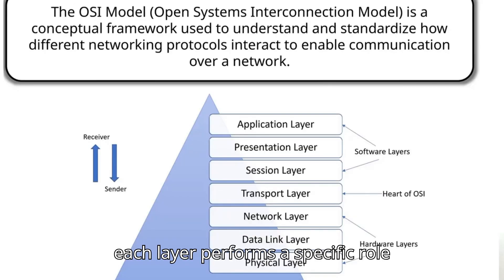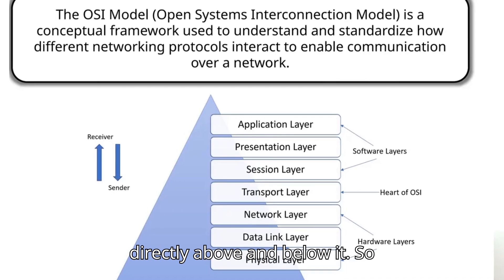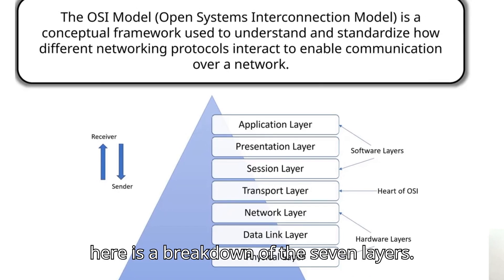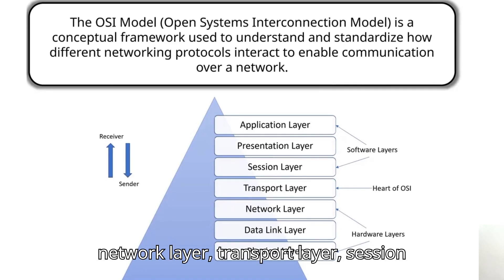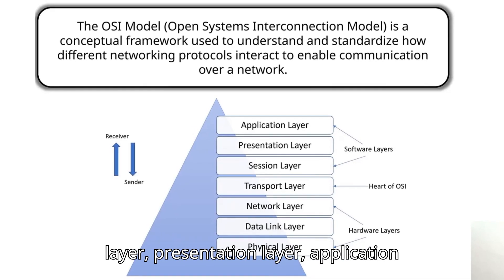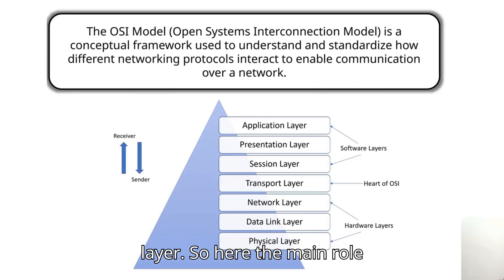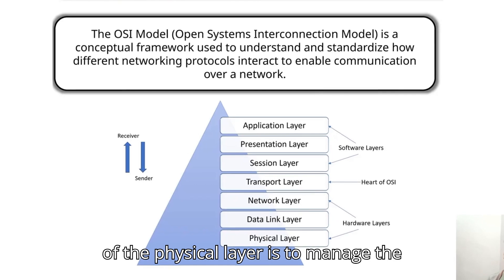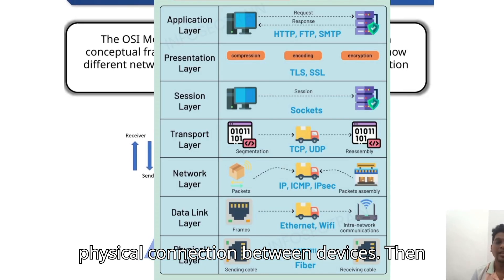Each layer performs a specific role and communicates with the layers directly above and below it. Here's a breakdown of the seven layers: Physical layer, Data Link layer, Network layer, Transport layer, Session layer, Presentation layer, and Application layer. The main role of the Physical layer is to manage the physical connection between devices.